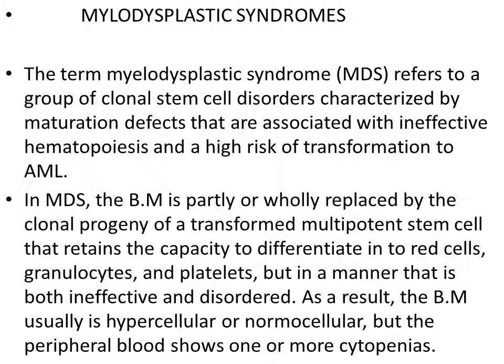In MDS, there is some transformation at the multipotent stem cell level. Starting from pluripotent stem cells, then myeloid-committed or lymphoid-committed stem cells, differentiation becomes more and more restricted. In these cases, there is a problem — some transformation at the early stage at the multipotent stem cell — so this can differentiate into abnormal red cells, abnormal granulocytes, and result in abnormality in the platelets. Maybe one lineage or maybe more than one lineage.